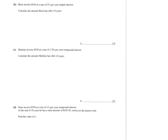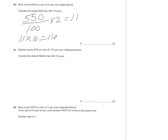Boris invests $550 at a rate of 2% simple interest. Calculate the amount of money Boris has after 10 years. For simple interest, find 1% then times by 2 — that's the annual interest. That's $11 per year. For 10 years, $11 times 10 gives $110 interest. But the question asks how much Boris has in total: $550 plus $110 equals $660.